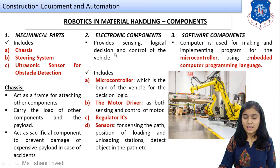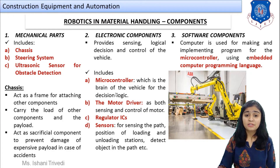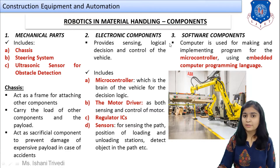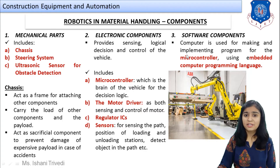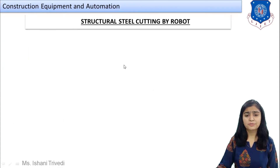The third component is the software system. Computers are used to make and implement the program for the microcontroller — the brain of the MHR — using embedded computer programming language. Robots always work on logic that is either 0 or 1, so an electronics engineer carries out the software work, feeds the programming, and based on that the robot operates.